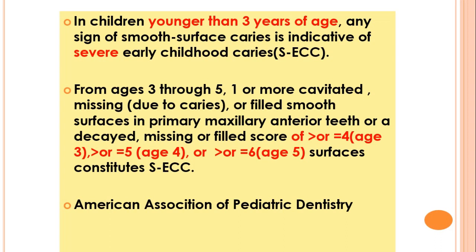In children younger than three years of age, any sign of smooth surface caries is indicative of severe early childhood caries (SECC). From ages 3 to 5, one or more cavitated, missing, or filled smooth surfaces in a primary maxillary anterior tooth, or a dmfs score of ≥4 at age 3, ≥5 at age 4, or ≥6 at age 5 constitutes severe early childhood caries.